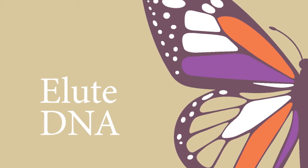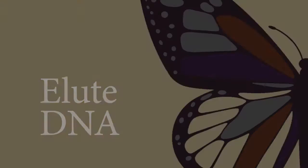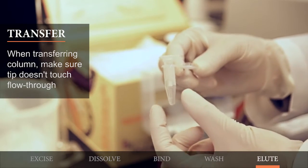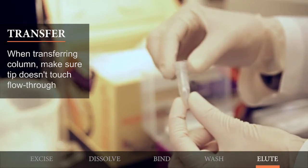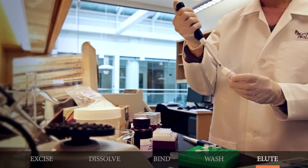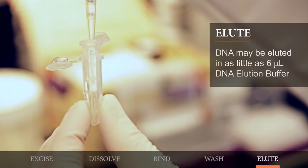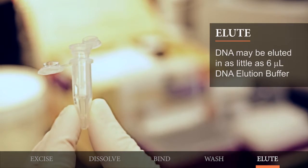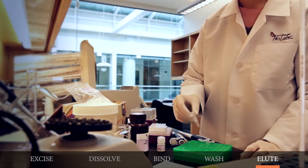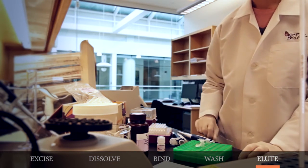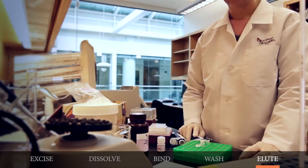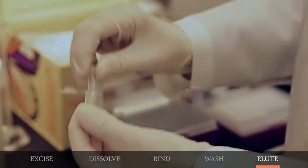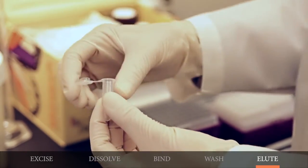In the final step, elute the DNA. Transfer the column to a clean microfuge tube, making sure that the tip of the column does not come into contact with the flow through. Add 6 or more microliters of DNA elution buffer to the center of the column membrane. Incubate for one minute. This incubation step is important for maximizing yields. Centrifuge for one minute and collect the flow through, which contains your gel-extracted DNA.